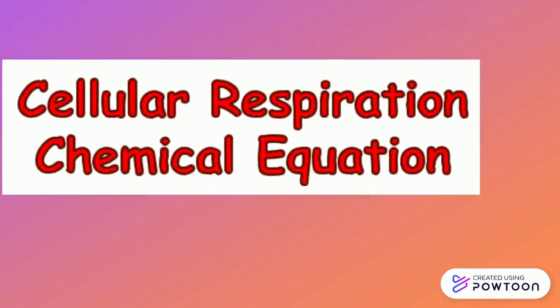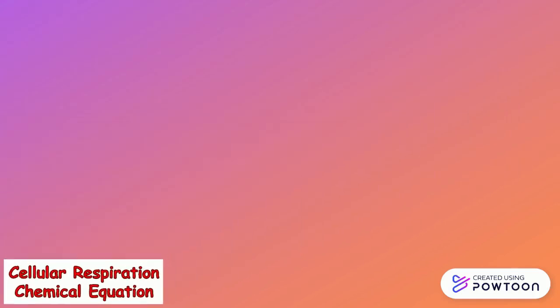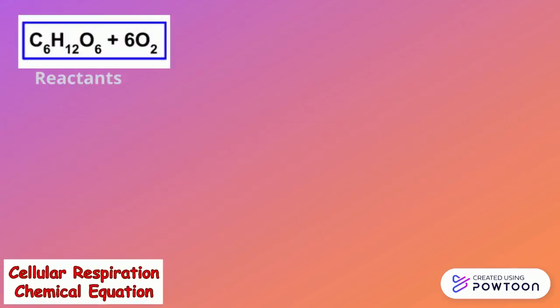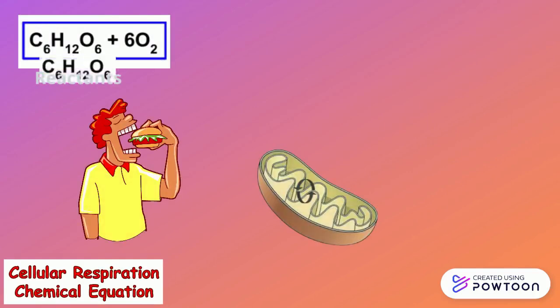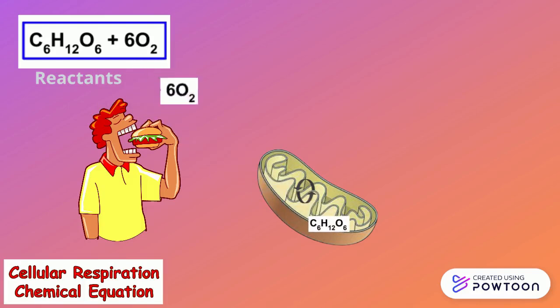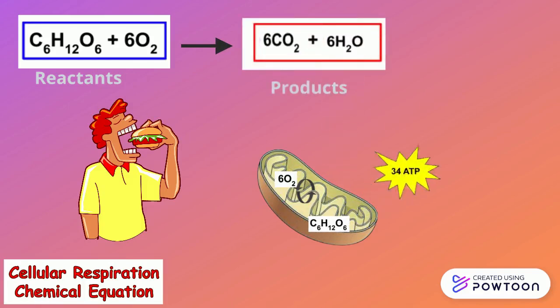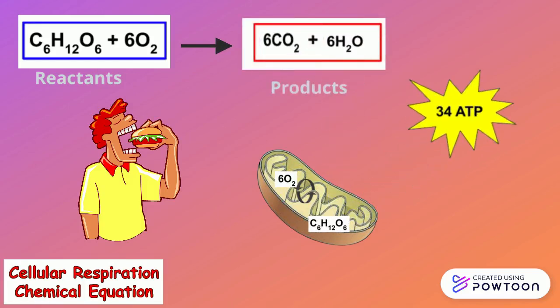The cellular respiration chemical equation begins with the reactants glucose and six oxygen, which enter the body by eating and breathing. They then go to the mitochondria where six CO2, six water, and 34 ATP are created.